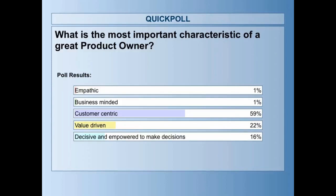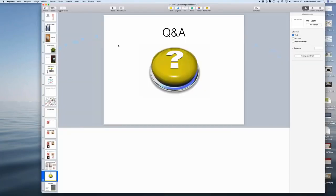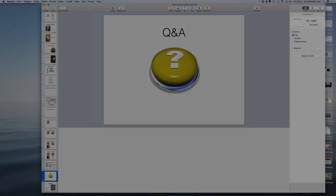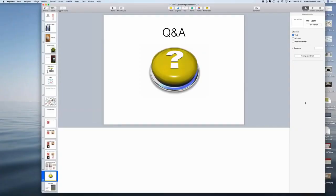That concludes the presentation. We have about 10 minutes for questions and answers. The first question from Leela is: how is vision different from goal? A vision is an image of a future state — a mental picture of where you want to be. A goal is something you may reach, and goals should clearly be measurable. A vision is not always measurable, but is more forceful and powerful. A vision helps you imagine what you're trying to do in a way that goals alone may not.